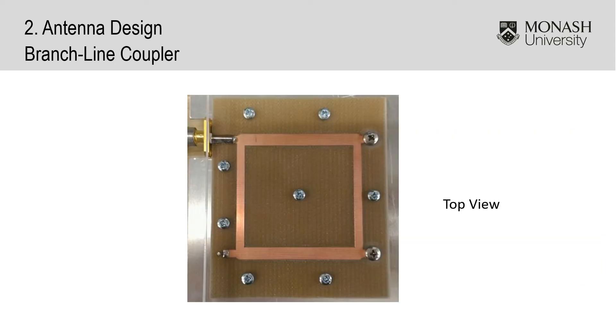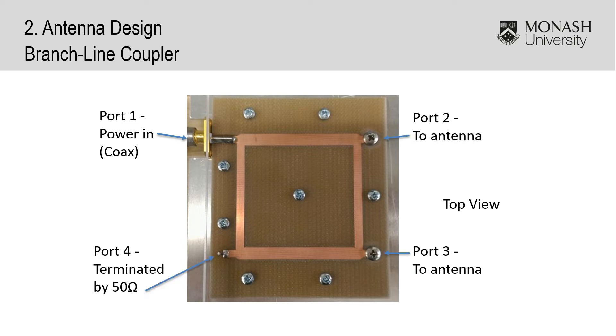For the circular polarized antenna, we began with the branch line coupler design. The branch line coupler has port 1 where the power comes in, port 2 and port 3 which connect to the antenna, and port 4 is terminated with a 50 ohm resistor.